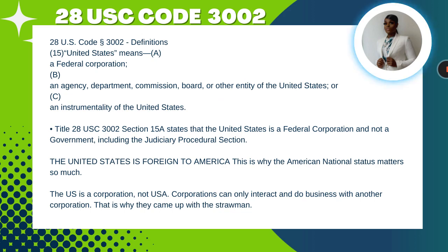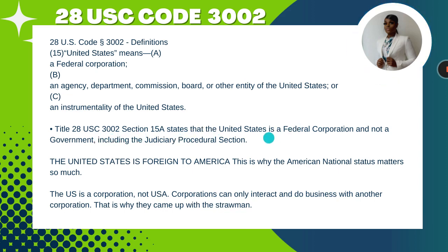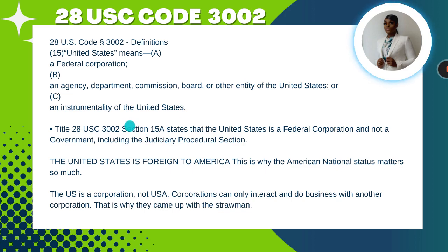This is where I started my studies — you may start your research elsewhere, but defining the U.S. as a corporation was very pertinent. Since Title 28 USC 3002 defines the United States as a federal corporation, that means it's not a government — it's not any type of judiciary. So by the United States being a corporation, it makes you start to think differently.